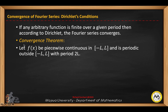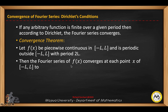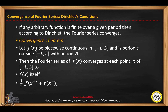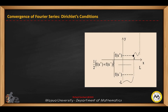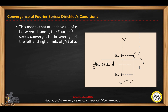The first convergence theorem states that if f of x is piecewise continuous in the interval negative l to l and it is periodic outside of the period with period 2l, then the Fourier series will converge at each point x in negative l to l to f of x itself, or one half of the sum of f of x plus and f of x minus.